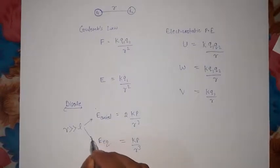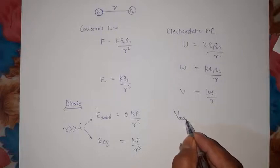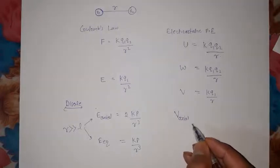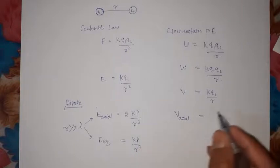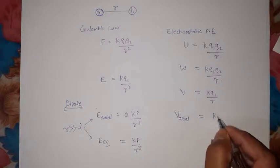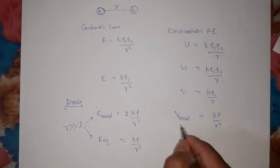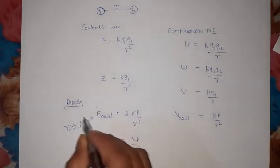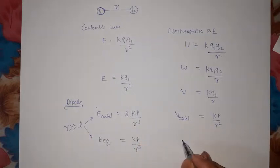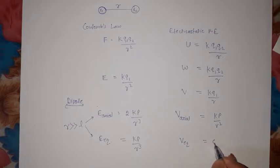Now over here, students, if we talk about electric potential of the dipole on the axial line, if you want to find this potential, then it's V = kP/r². This is the electric potential on the axial line of the dipole. And if we talk about equatorial, the equatorial potential is zero.